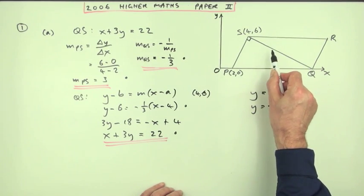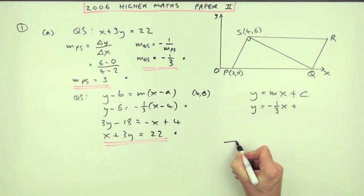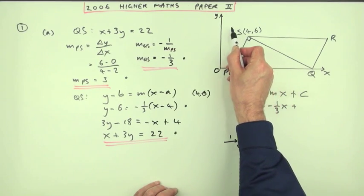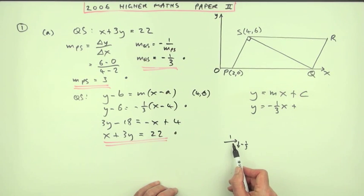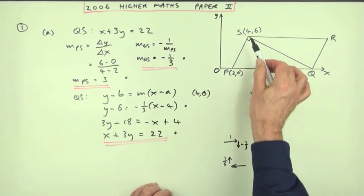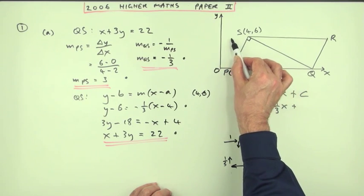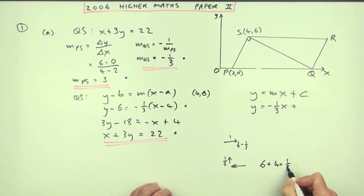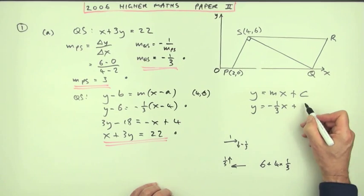The gradient of that line is negative 1 third. A gradient of negative 1 third means for one step along, it goes down 1 third of a step. So you could reverse that to see where it would hit the y-axis. That would say then that for one step back, or for each step back, you would climb a third. So if you're at four along, taking four steps back, this line would climb four lots of a third, which is one and one third. So if it's at six already, it means it'd be six plus four lots of a third, which is seven and a third, or 22 upon three.